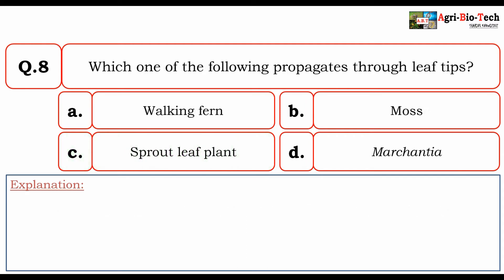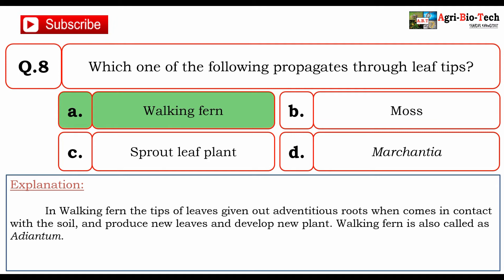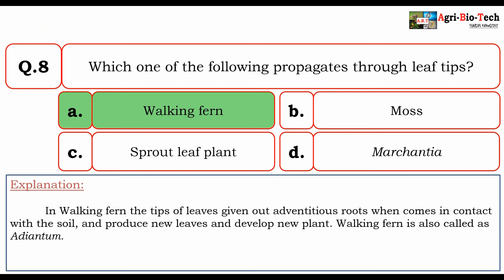Next question: which one of the following propagates through leaf tips? The options are walking fern, moss, sprout leaf plant, and Marchantia. The correct option is A: walking fern. In walking fern, the tips of leaves give out adventitious roots when they come in contact with the soil and produce new leaves, developing a new plant. Walking fern is also called Adiantum.